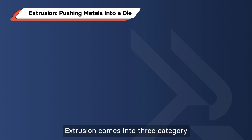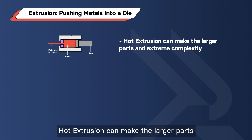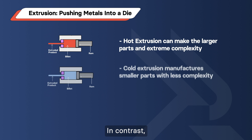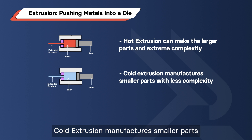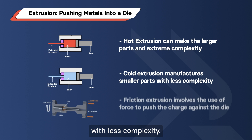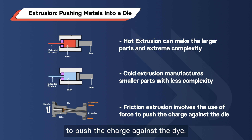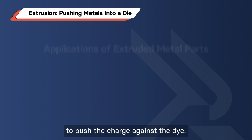Extrusion comes in three categories – hot extrusion, cold extrusion, and friction. Hot extrusion can make larger parts with extreme complexity. In contrast, cold extrusion manufactures smaller parts with less complexity. Friction extrusion involves the use of force to push the charge against the die.